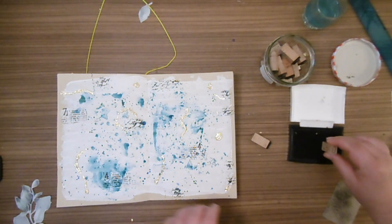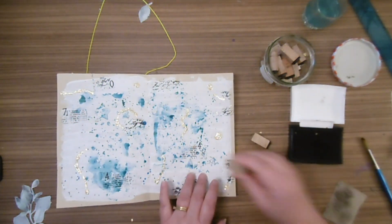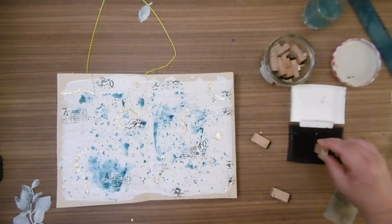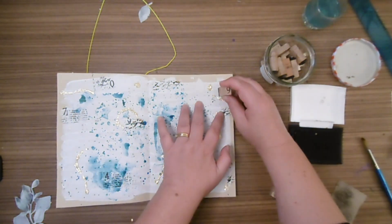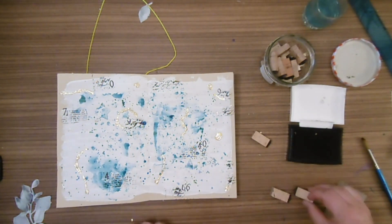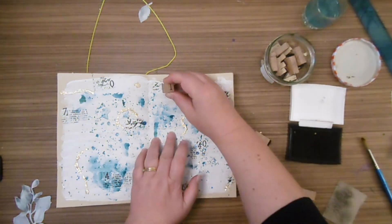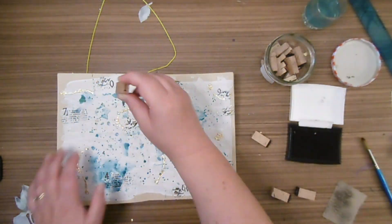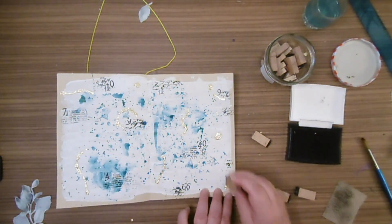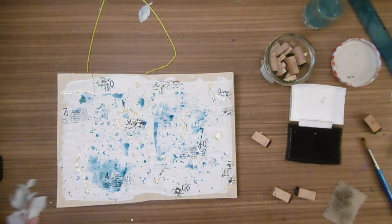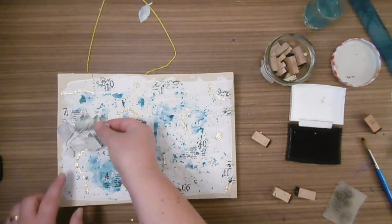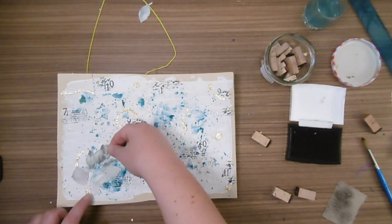Maintenant, pour terminer un petit peu cette page, je mets avec des encres et des tampons un petit fond. C'est pour ça que j'utilise des numéros et des tampons écriture pour un petit peu mettre du relief dans cette page.